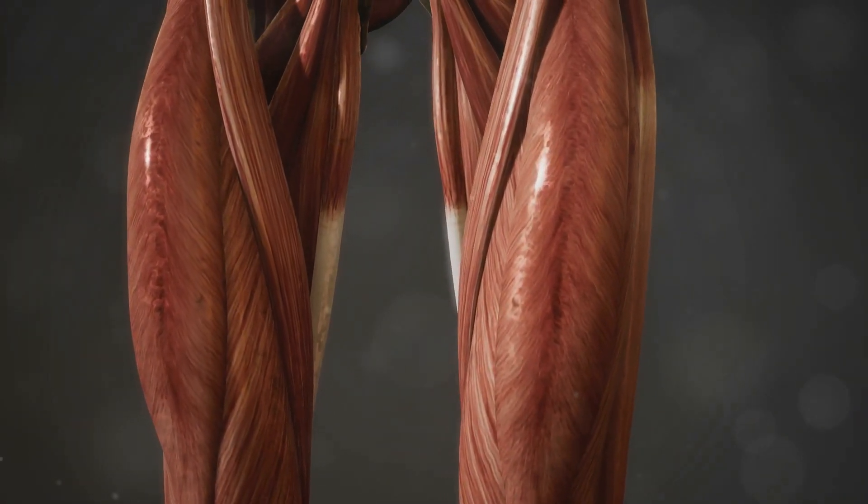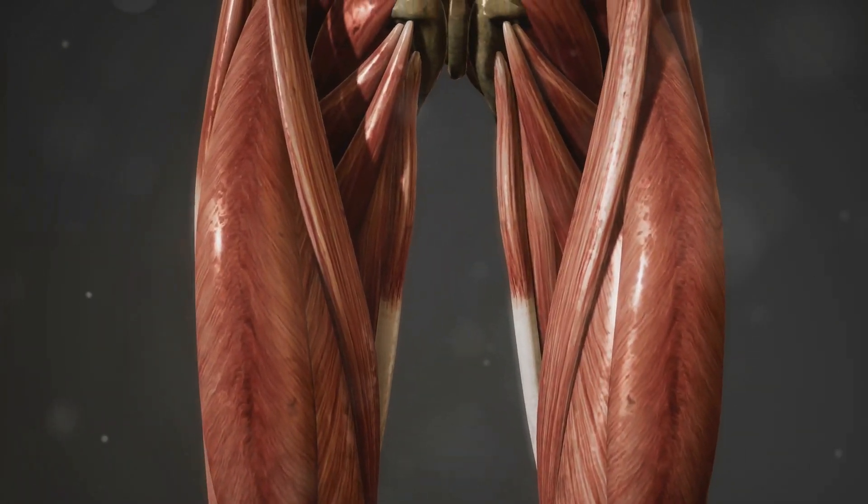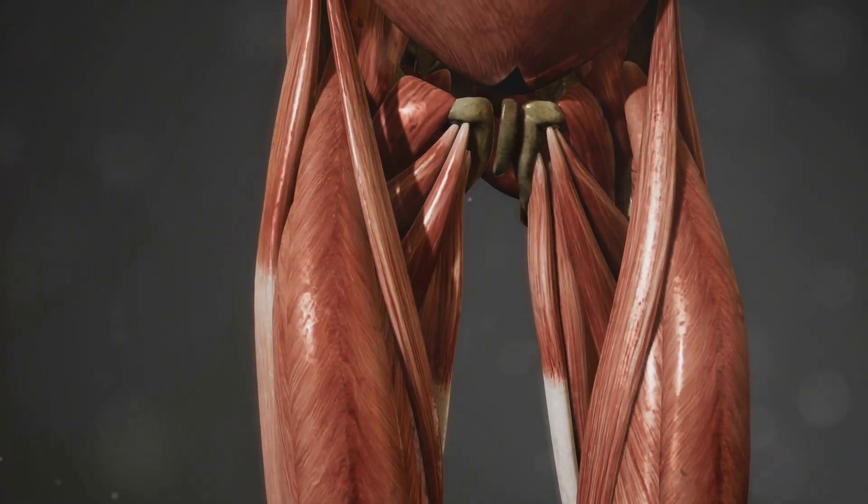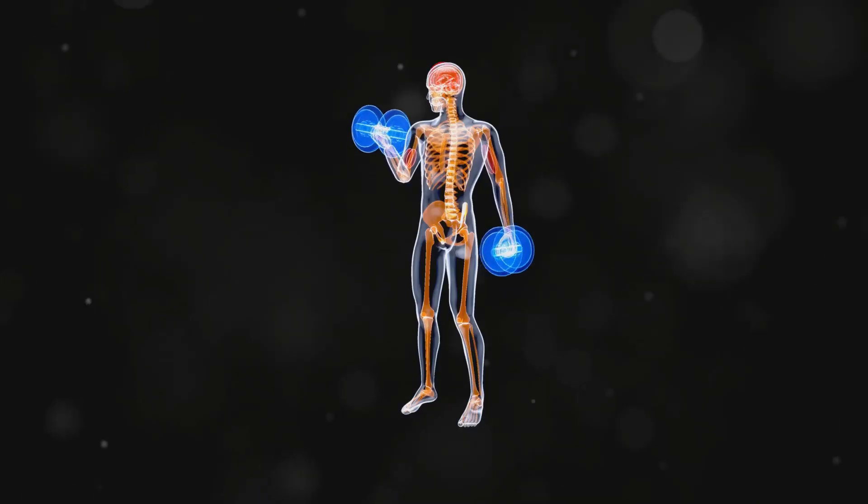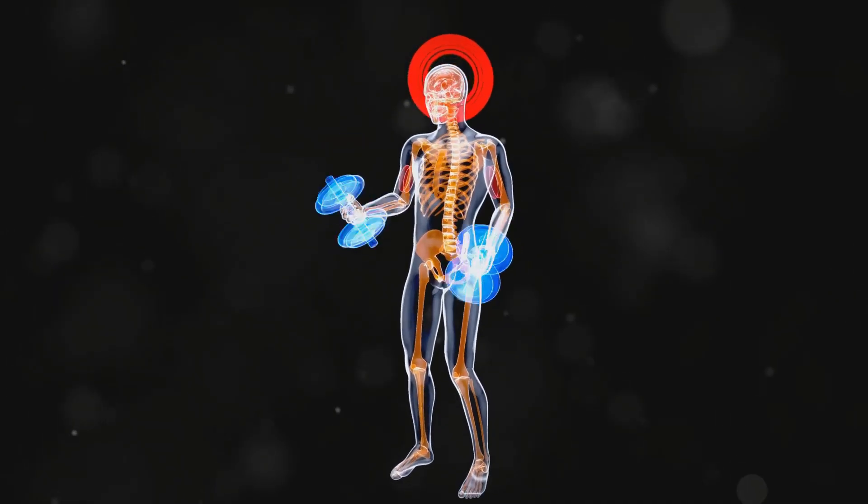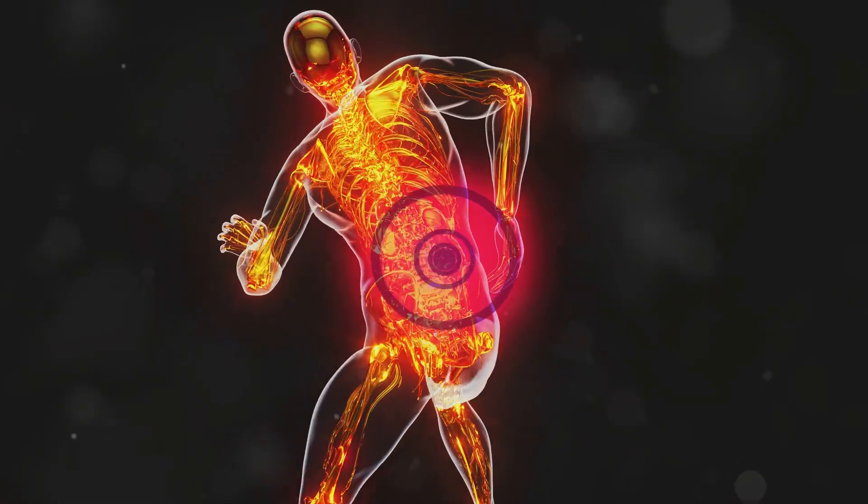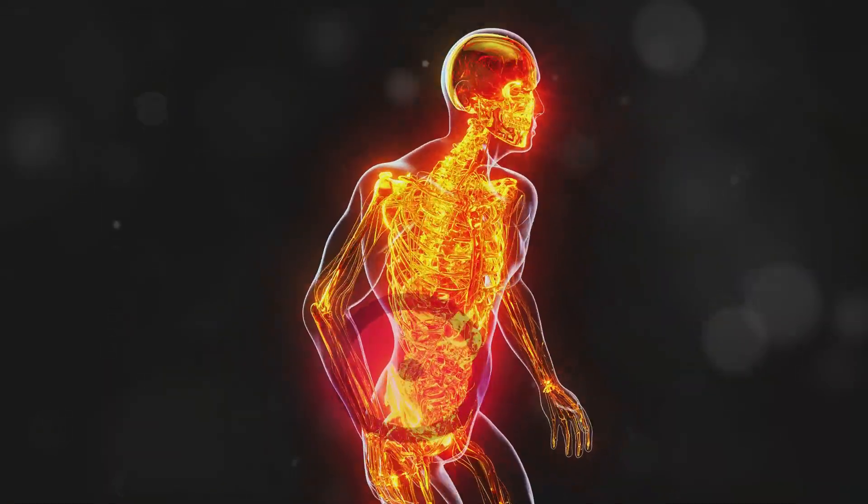Next up, the muscular system. Because what good are bones without something to move them? With over 600 muscles in the human body, ranging from tiny muscles that control your eyelids to the massive quadriceps in your thighs,